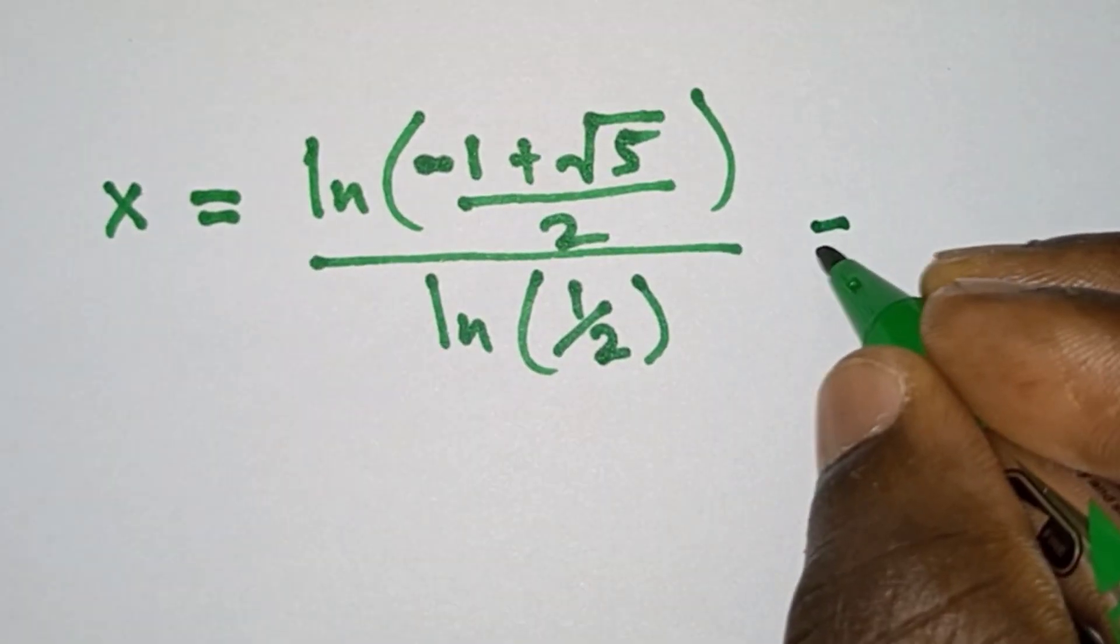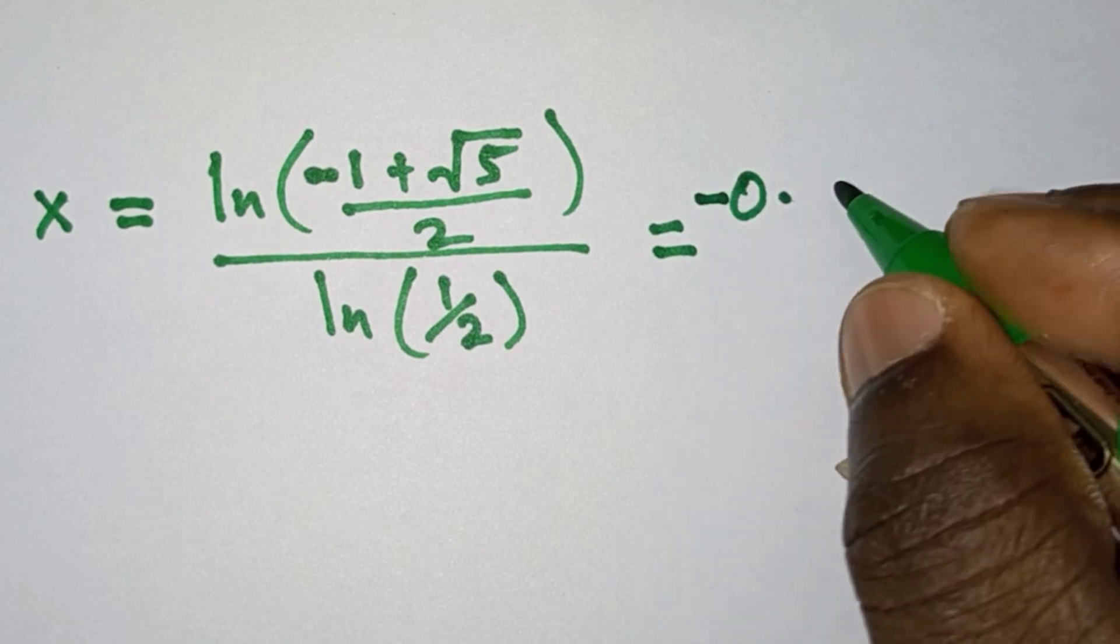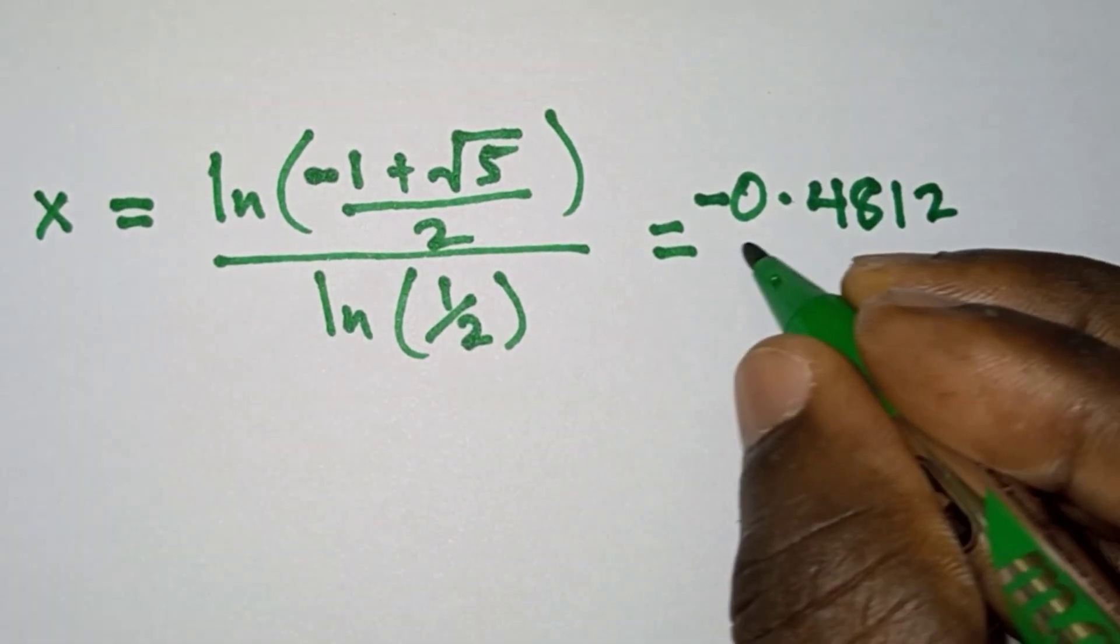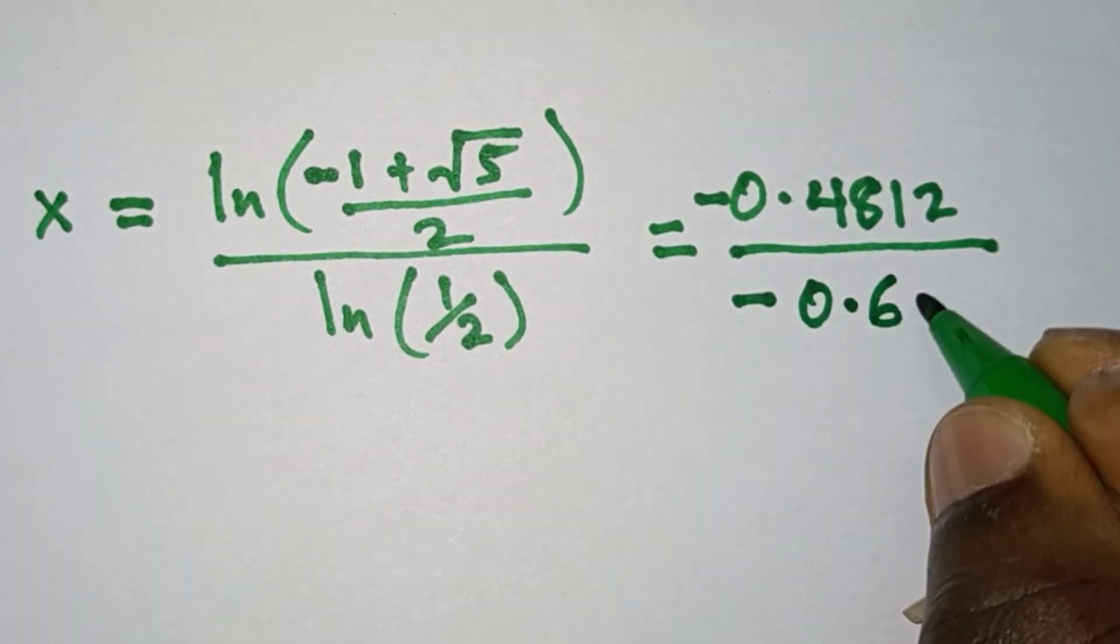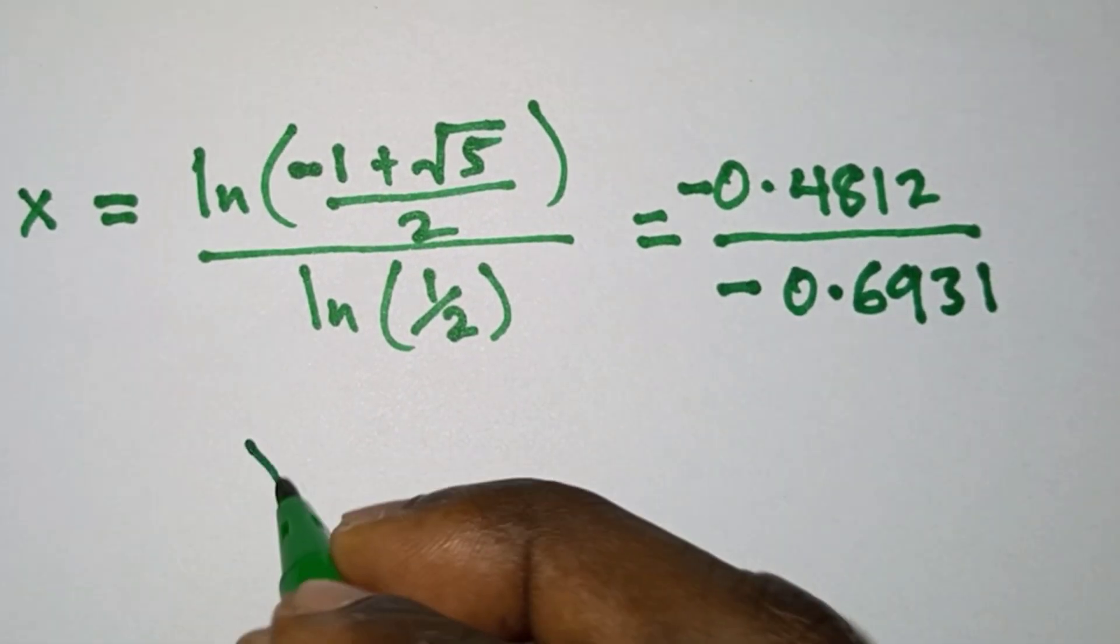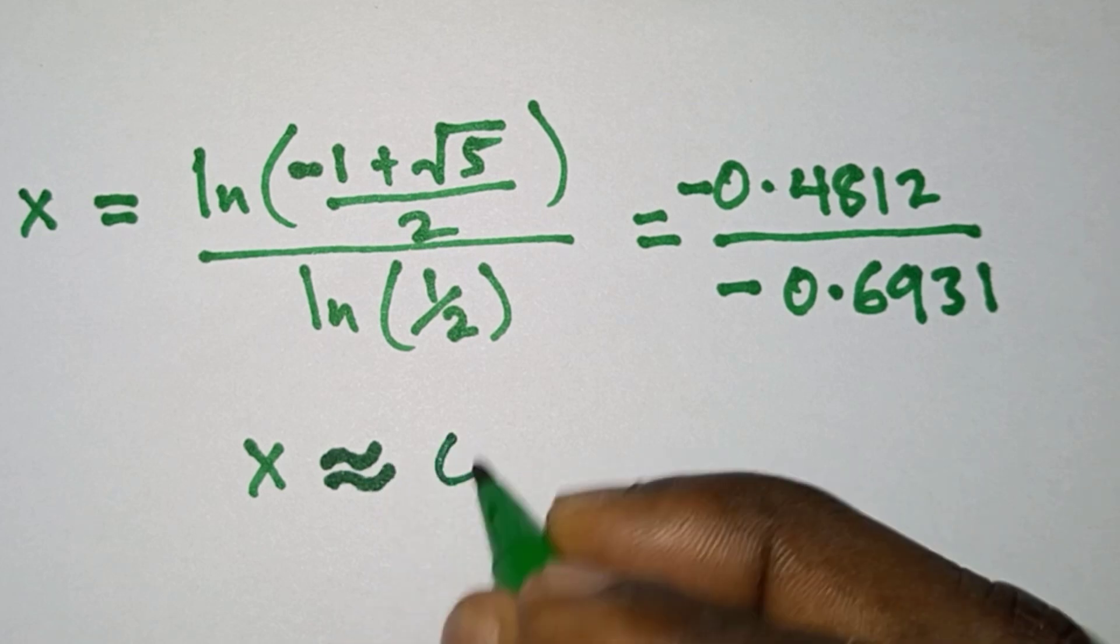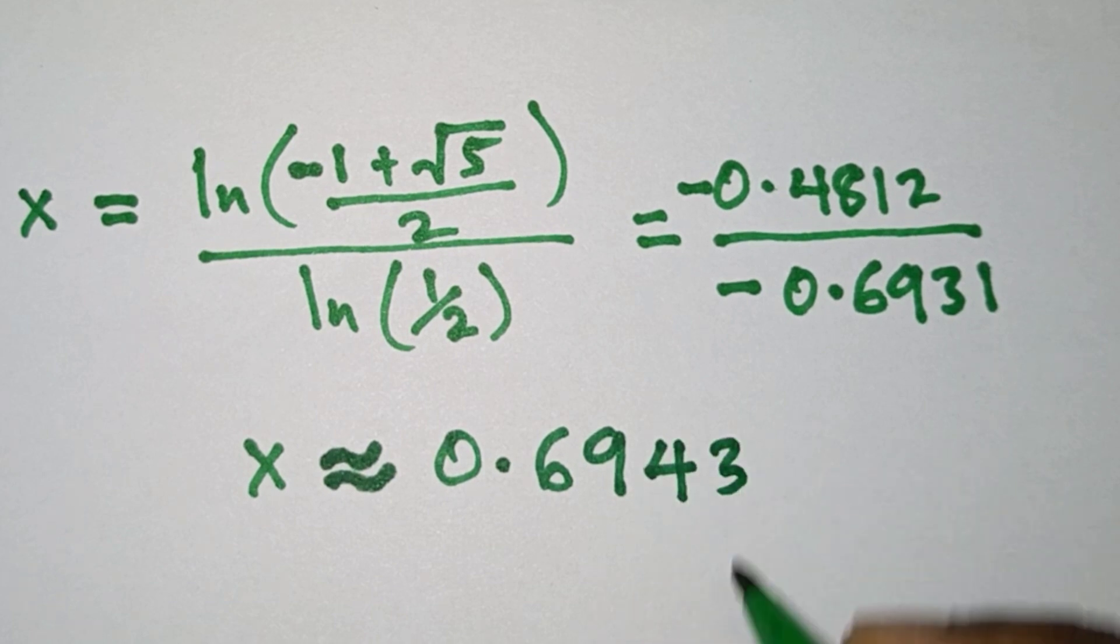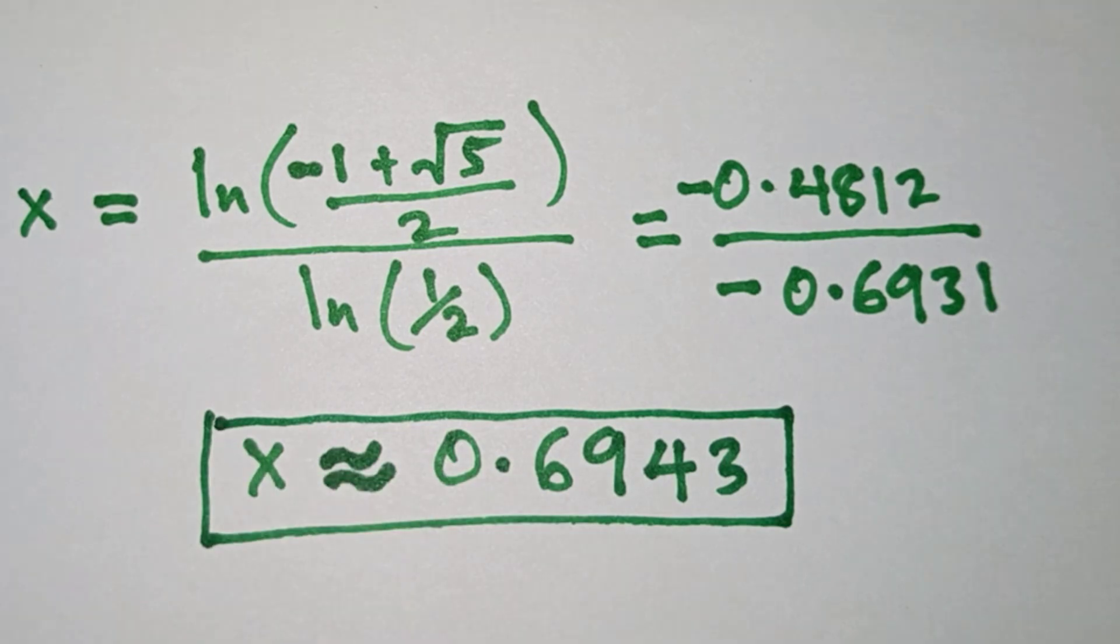And the numerator will give us approximately -0.4812 divided by the denominator approximately 0.6931. So we have x ≈ 0.6943 as one of the solutions to the problem.